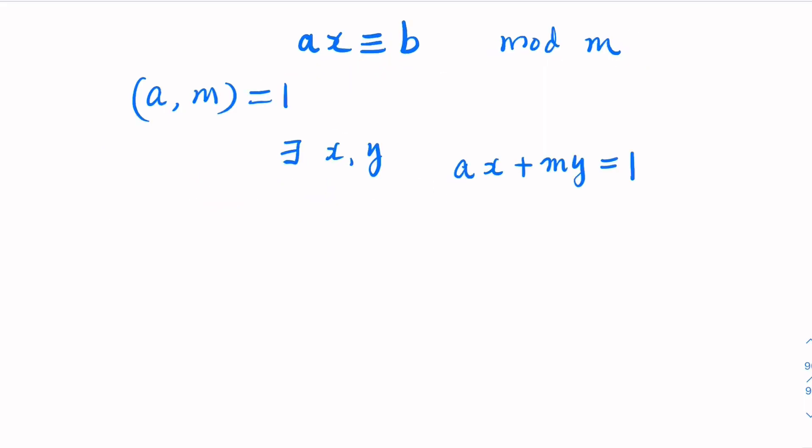The equation here always has a solution. There is a famous theorem saying that if two numbers are relatively prime, then there exists some integer x and y such that the linear combination here, ax plus my equal to 1. How do we find x and y? There is what is called Euclidean algorithm.